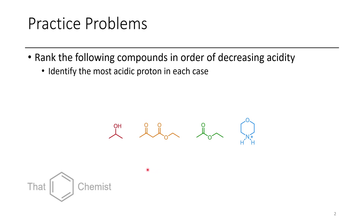In this first problem, we have to rank the four following compounds in order of decreasing acidity, and also identify the most acidic proton in each case. Looking at these, there's a couple that are pretty close. This protonated amine and this beta-ketoester are pretty close in terms of acidity. Depending on the amine, this might actually be less acidic, but in this case it's more acidic.